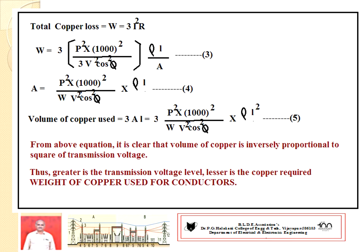This means that if we use a high voltage rating for the line, the volume of copper required is less. Using high voltage reduces the volume of conductor needed, saving copper — the weight of copper required reduces and the cost of copper reduces, which is a very economical advantage. This is one of the most important aspects to remember.